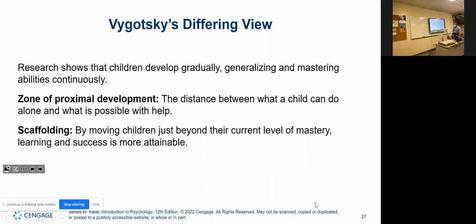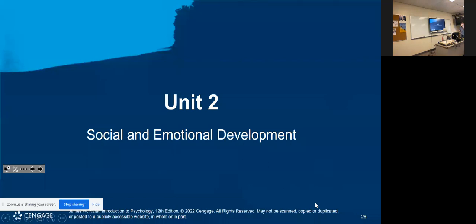So that's briefly what zone of proximal development and scaffolding are about. Both are very much rooted in social learning — we learn from others as opposed to surviving on our own. Which is possible, but we wouldn't have a well-developed individual if that were to happen.